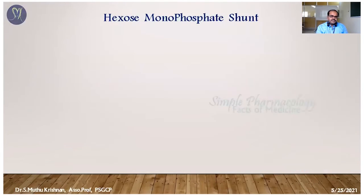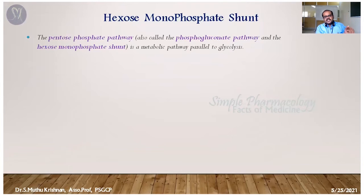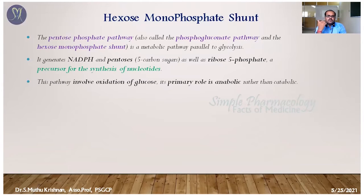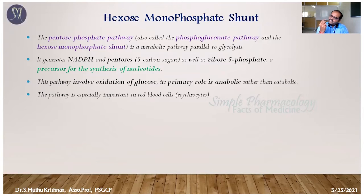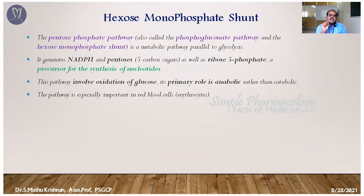The next pathway is the HMP shunt, otherwise called the pentose phosphate pathway — another glucose oxidation pathway. This pathway is essential for production of pentose phosphate. Ribose-5-phosphate is essential for nucleotide formation — for DNA replication or cell cycle processes. A nucleotide consists of a nitrogenous base, one phosphate group, and one pentose sugar. That pentose sugar, ribose-5-phosphate, is synthesized by this HMP shunt.